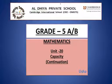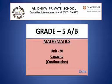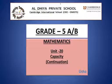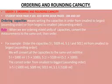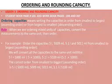Good morning children, welcome to our new maths lesson. Today we will continue chapter unit 20, Capacity. We are in lesson 3: ordering and rounding capacity. Student book page number 103 and workbook pages 216 and 207.